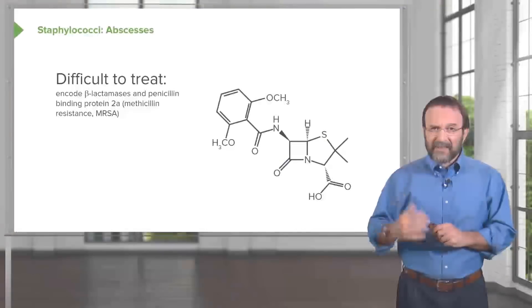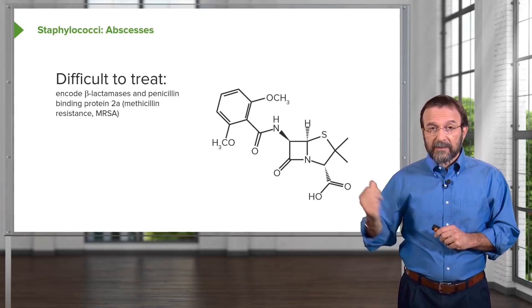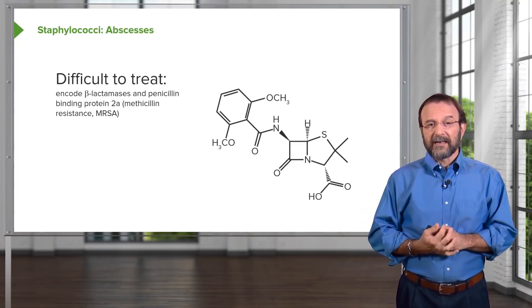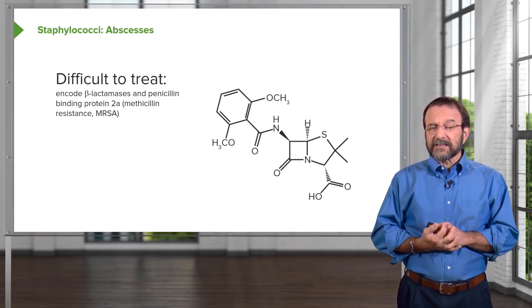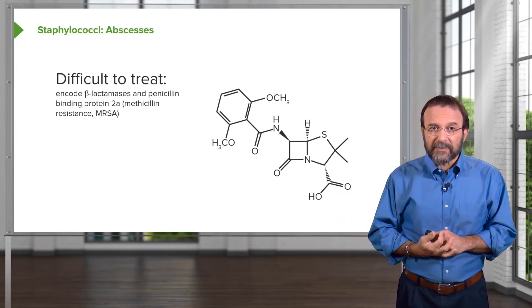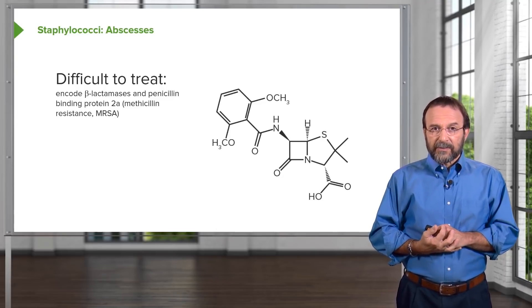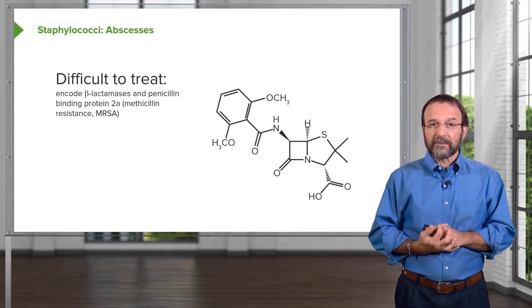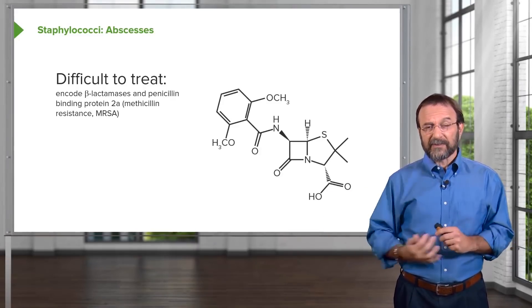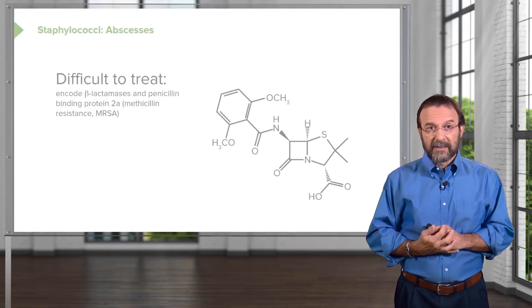Staphylococcal infections are very difficult to treat. Antibiotic resistance has become widespread among staphylococcal strains. There are many beta-lactamases that encode resistance to penicillin-type antibiotics. The bacteria also make a penicillin-binding protein 2A, which further confers resistance. You may have heard the term MRSA — methicillin-resistant Staph aureus — described as a superbug because these strains are extremely difficult, almost impossible, to treat with antibiotics.